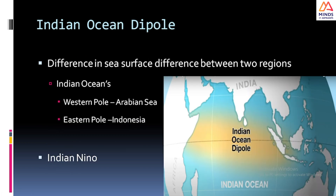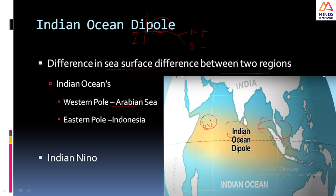The Indian Ocean Dipole is basically the difference in sea surface temperature of the Indian Ocean between two regions: the eastern region of the Indian Ocean and the western side. The western side indicates the Arabian Sea and the eastern side indicates Indonesia. The term 'dipole' means two — 'di' means two and 'pole' refers to the two extreme ends. In this phenomenon, the dipole represents warm water on one side and cool water on the other, or vice versa.